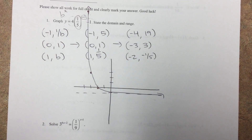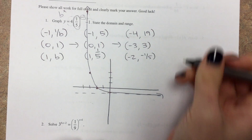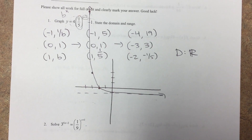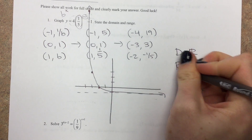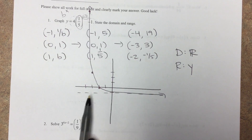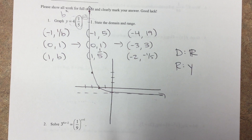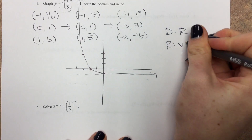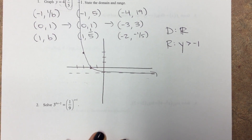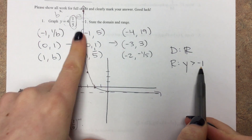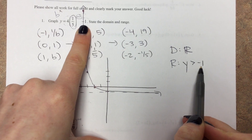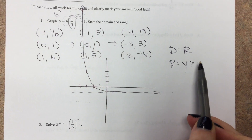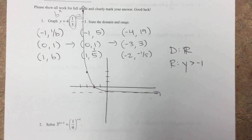Domain? All reals — exponential functions are always all reals; you can plug in any x value with no restrictions. The range is always about what y values we're looking at. That dotted line provides a boundary — you're not going to go below it. So using that dotted line as a guide, our range is greater than negative one. The one scenario where you'd have a less than for the range is if there was a negative out front — that would flip the whole graph upside down.